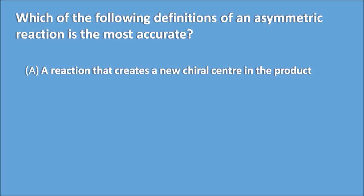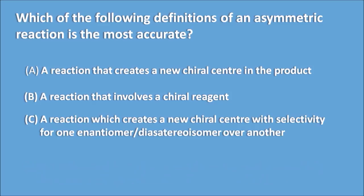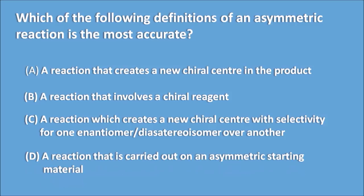Option B: a reaction that involves a chiral reactant, so here the reactant is chiral. Option C: a reaction which creates a new chiral center with selectivity for one enantiomer or diastereomer over another — this indicates it produces two optical isomers, one being the major and another the minor. Option D: a reaction that is carried out on an asymmetric starting material.